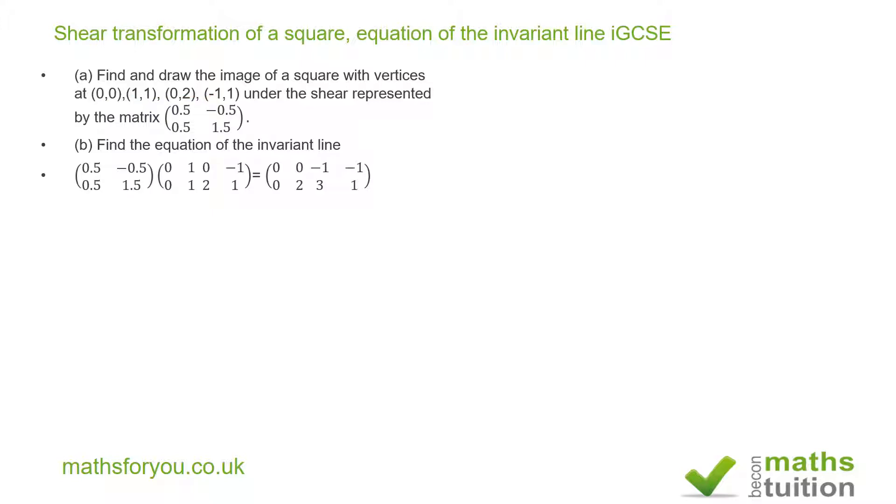What I do, you probably know this already, is 0.5 times 0 plus -0.5 times 0 and you get 0 for the x. For the y you do 0.5 times 0 plus 1.5 times 0 and you get 0.